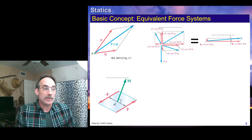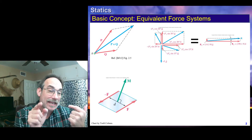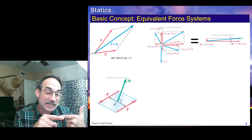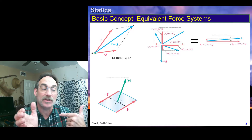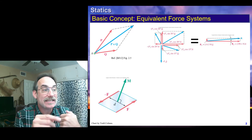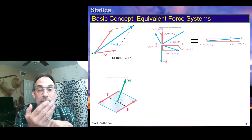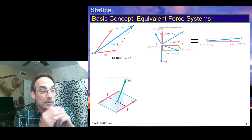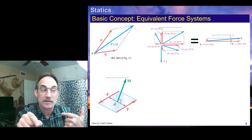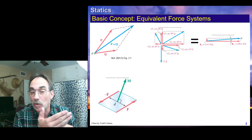We looked at this when we got to couples. If we had two forces that were parallel, equal and opposite, separated by a distance, the force times the perpendicular distance between the vectors is called a couple, and that is equivalent to a moment. We could take those two couple forces, F and minus F, and replace them with the equivalent moment M. In this case, the equivalent force system is just a moment with no resultant force. So we could take this moment and replace it with an equivalent couple system — two forces, no moment — or take the two forces and replace them with an equivalent force system, which is simply the moment with no force.